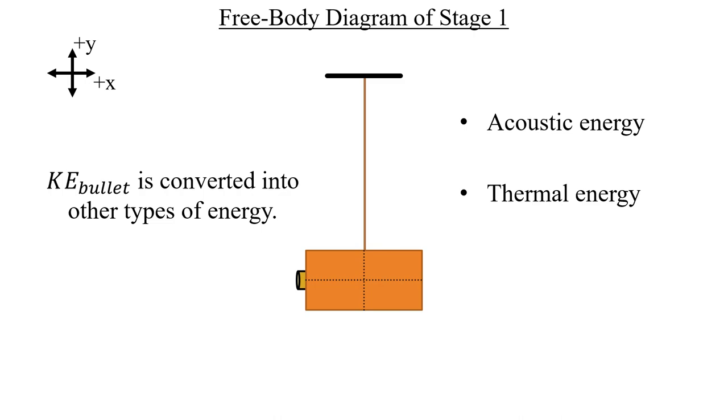Additionally, some amount of energy is required to exert enough strain on the block to deform it and allow the bullet to become lodged inside. We can call that deformation energy. So all of this is the reasoning behind why the conservation of energy does not apply in stage one when the completely inelastic collision happens.